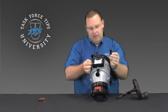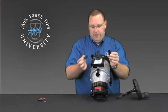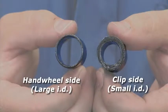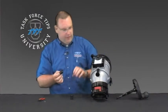There's two size bushings. This is kind of critical here. There's a large bushing and a small bushing. These also have to be switched when you change the hand wheel. So let's go ahead and set this one over here.